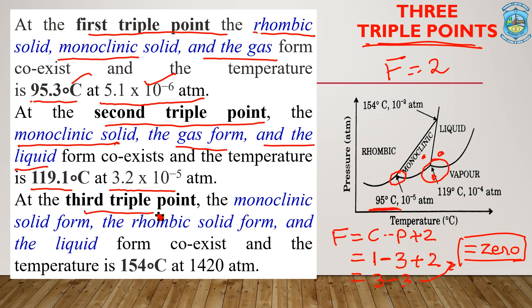The third triple point occurs at a temperature of 154 degrees Celsius with atmospheric conditions of 1420 atmospheres, and here the three states that coexist are monoclinic, rhombic, and the liquid state. So these are the three triple points that exist in this sulphur system. As discussed in the general rule: areas always have F = 2, lines have F = 1, and triple points always have F = 0. Areas are bivariant, lines are univariant, and triple points are invariant in terms of degree of freedom.